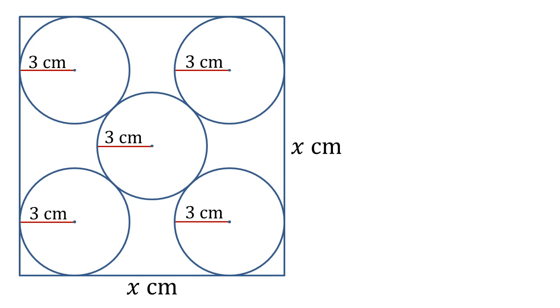In this problem we're given a square with sides x centimeters. Inside this square are five circles, each of radius 3 centimeters. These are arranged such that four of the circles are in the corners and the other one is in the middle. The circles are all touching each other on the circumference and they're just touching the edges of the square on the circumference as well. Using this information we need to work out what is x.